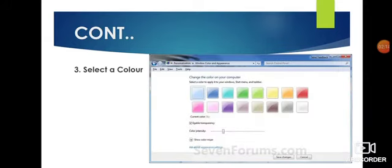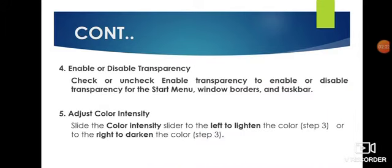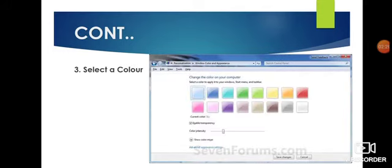Next, select a color. You can select any color from the options shown. You can also enable or disable transparency. After selecting the color, at the bottom there is a checkbox to enable transparency. Click on that option — this will make the border, start menu, and taskbar become transparent.